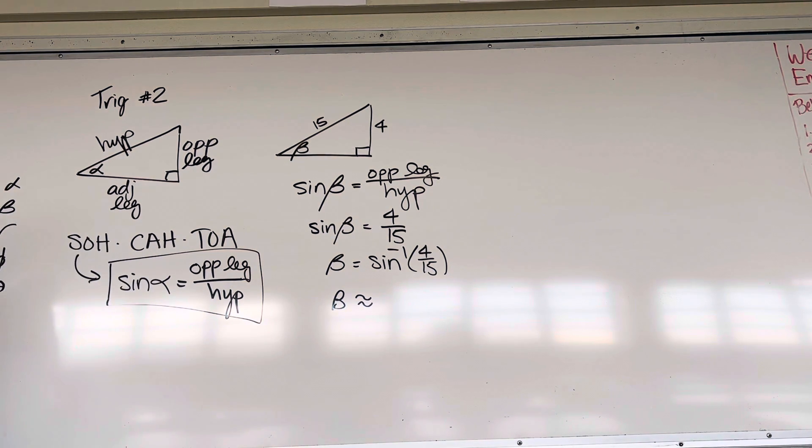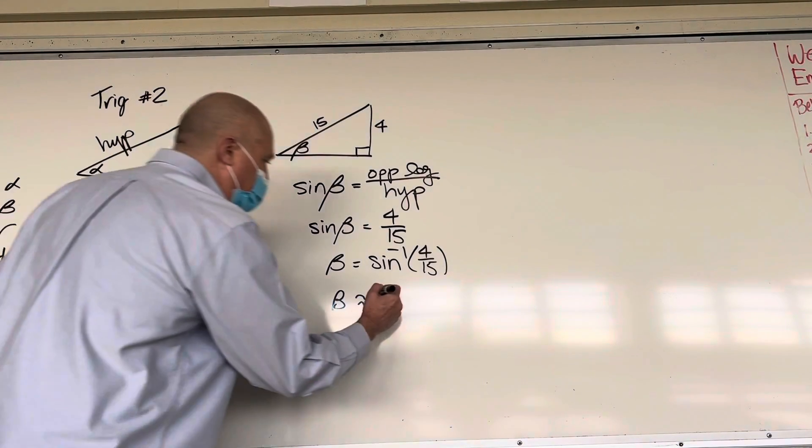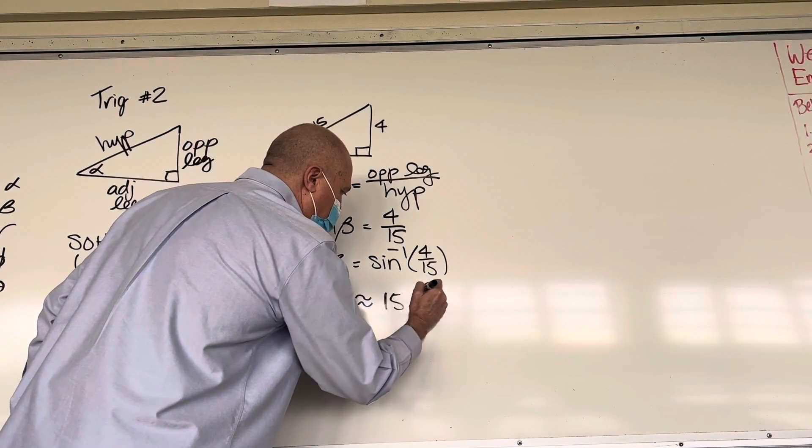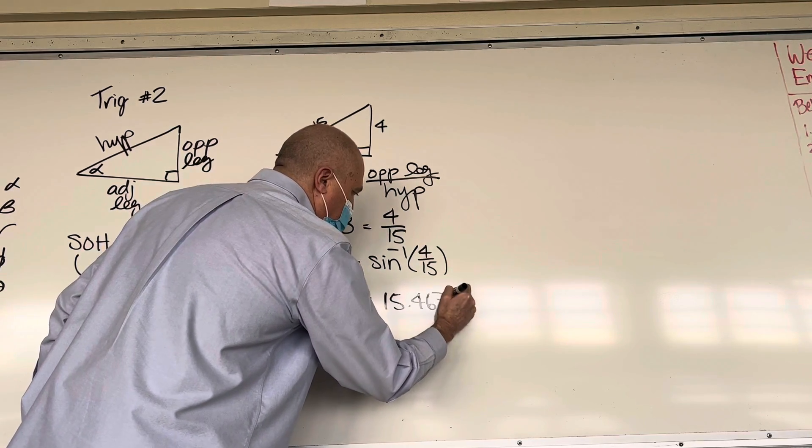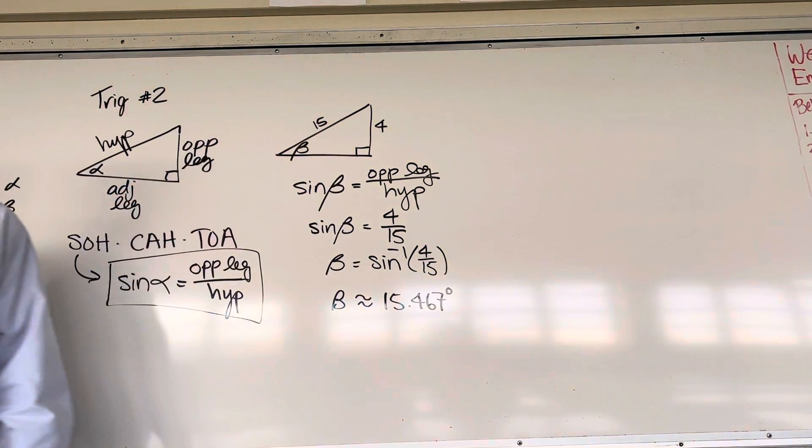Some of you have iPhones, some of you have Android. Can you type it in without me? So, Tiffany, do 4 divided by 15 equals. Good. Switch, do 2nd so we can get sine to the negative 1. Good. 15.467 degrees. And we're rounding it.